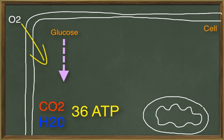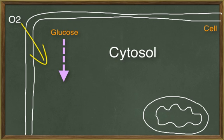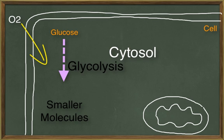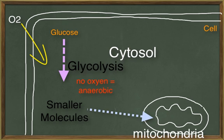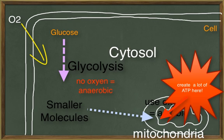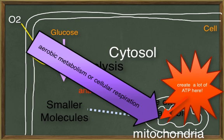The first steps begin in the cytosol of the cell. Here in the cytosol, glucose is broken down into smaller molecules in a process called glycolysis. Glycolysis does not require oxygen, so the process is said to be anaerobic, which means no oxygen. The molecules produced through glycolysis are small enough to be absorbed by the mitochondria. Once inside the mitochondria, they will be involved in reactions that use oxygen and are considered aerobic, creating most of the ATP the cell needs. These reactions are collectively called aerobic metabolism or cellular respiration.